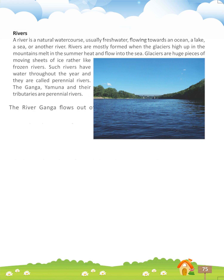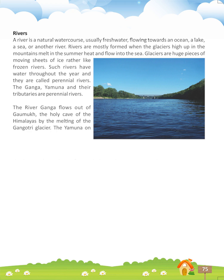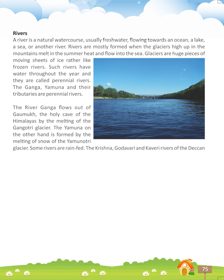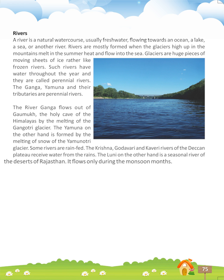The Ganga, Yamuna and their tributaries are perennial rivers. The river Ganga flows out of Gaumuk, the holy cave of the Himalayas, by the melting of the Gangotri glacier. The Yamuna on the other hand is formed by the melting of snow of the Yamunotri glacier. Some rivers are rain-fed. The Krishna, Godavari and Kaveri rivers of the Deccan Plateau receive water from the rains. The Luni is a seasonal river of the deserts of Rajasthan and flows only during the monsoon months.